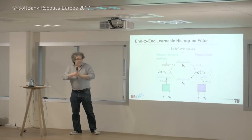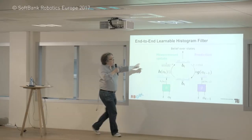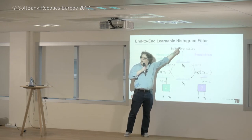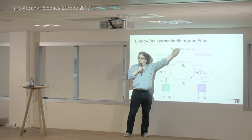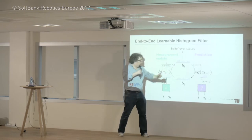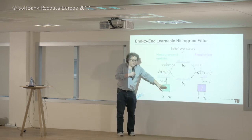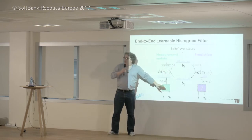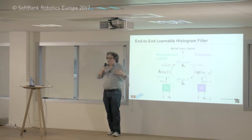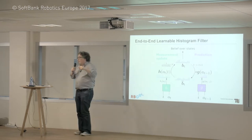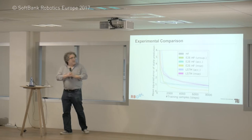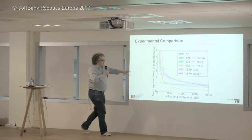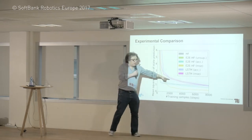Usually what we do is feed the error back — we have a prediction and a true state, and that is the error. But we can also define the error at a different point and train the network. As you saw in the dashed line, that actually works pretty well.